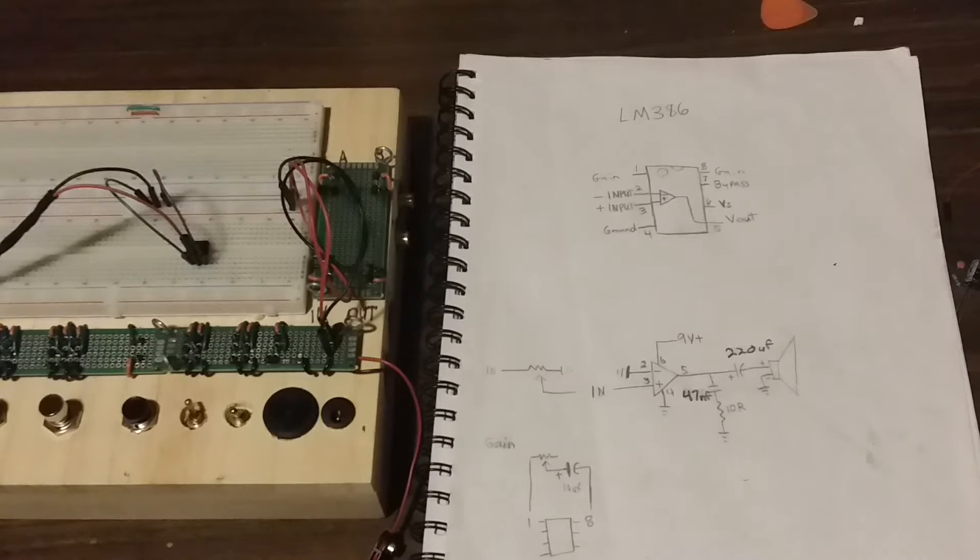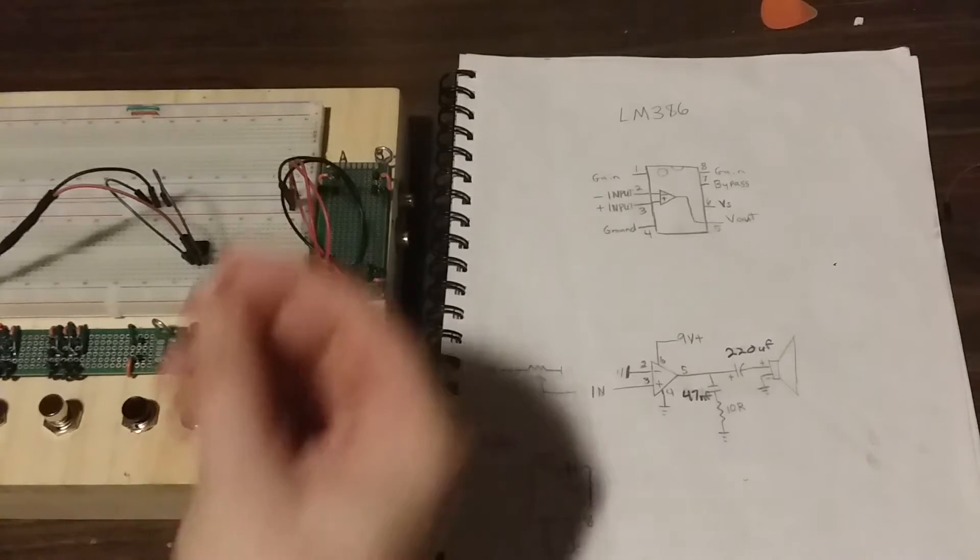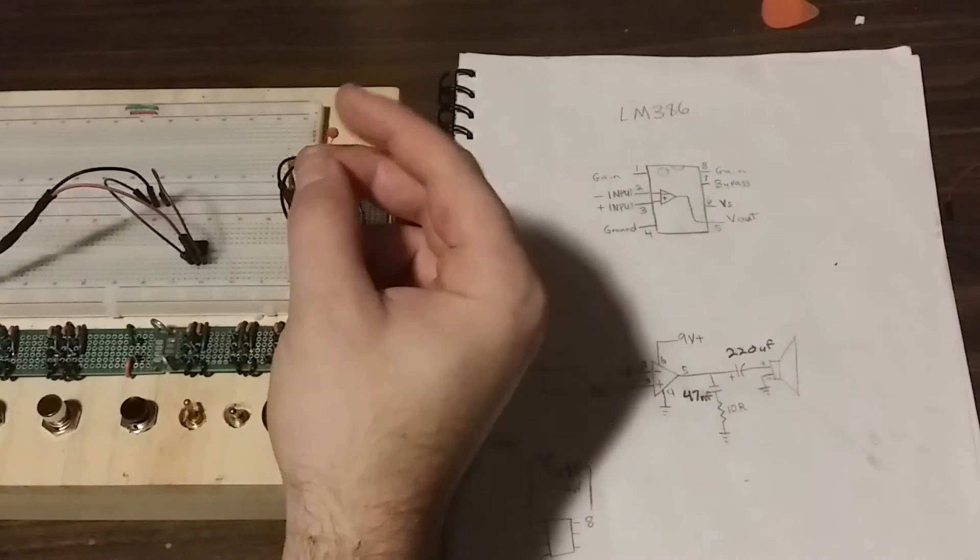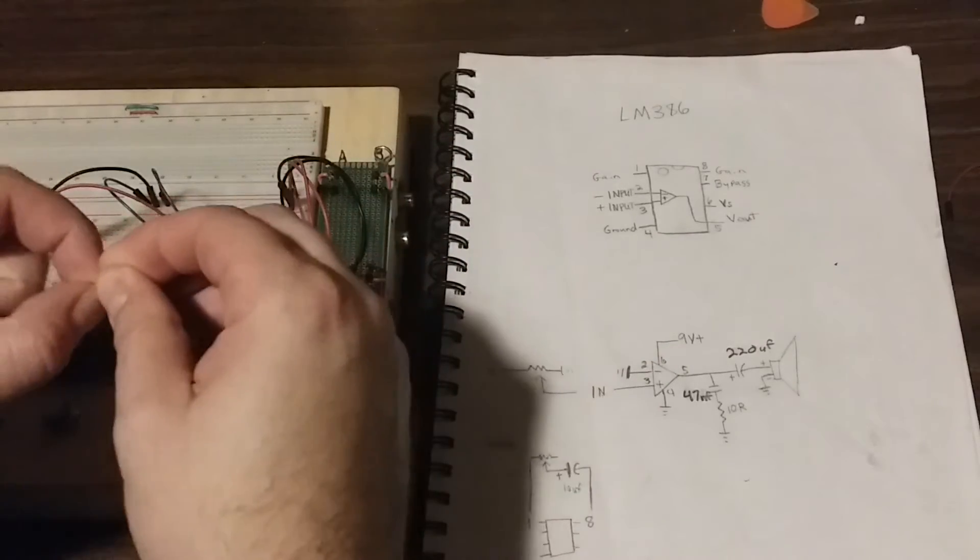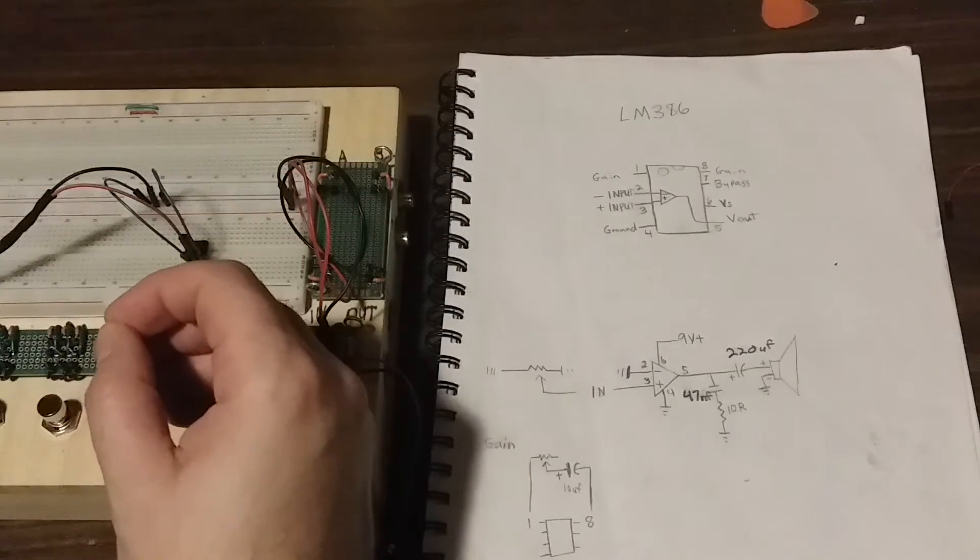First, we have our 47 NF capacitor, which goes into a 10 ohm resistor, which goes into ground. So I'm going to start with our 47 NF capacitor and I'm going to plug it in to pin number 5.